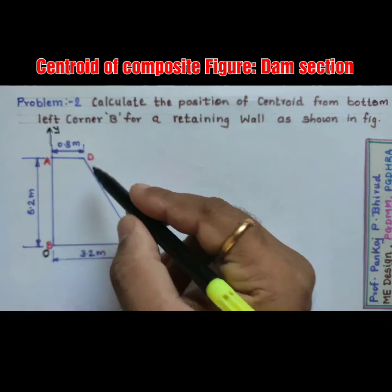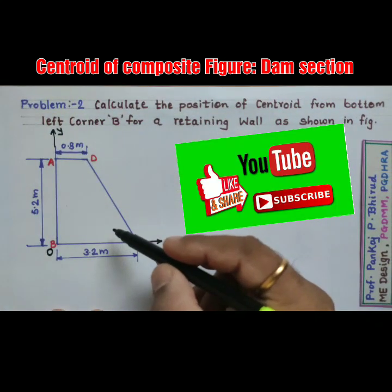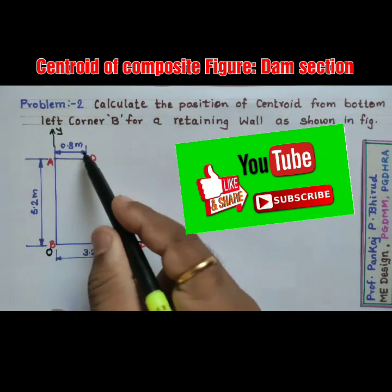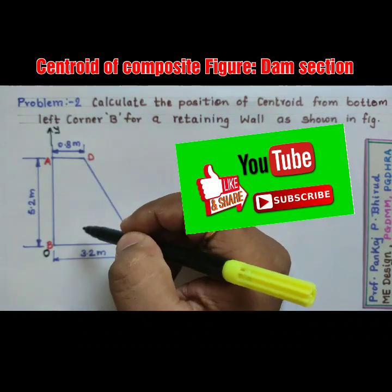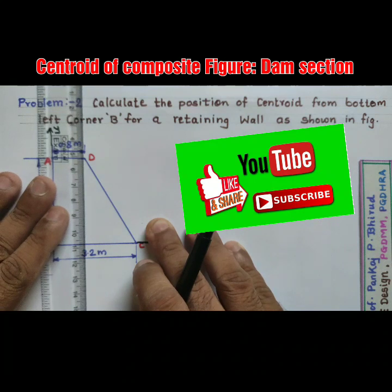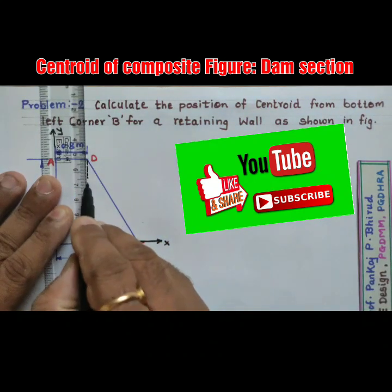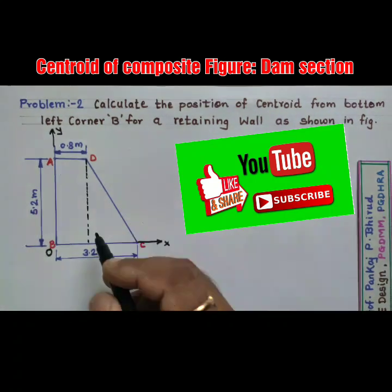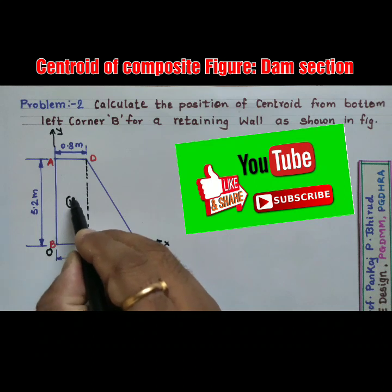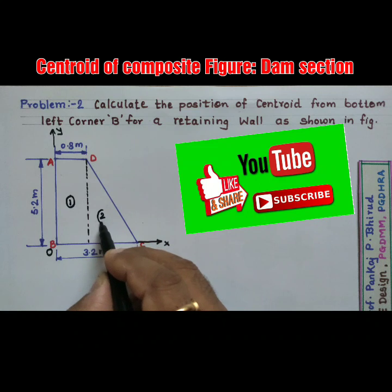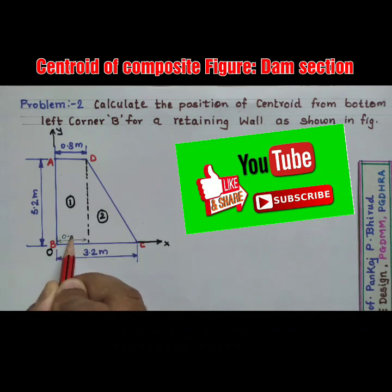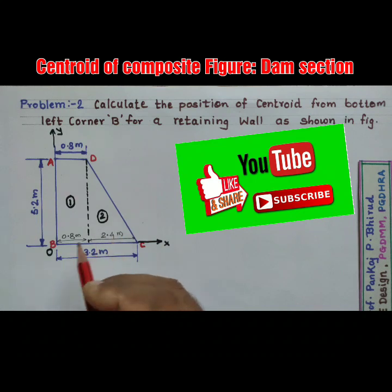Step two: divide this composite figure into basic figures. There are two figures — a combination of a rectangle and a triangle. Divide into two parts: the first figure is a rectangle and the second figure is a triangle. This distance will be 0.8 m and the remaining distance is 2.4 m; the height remains the same.